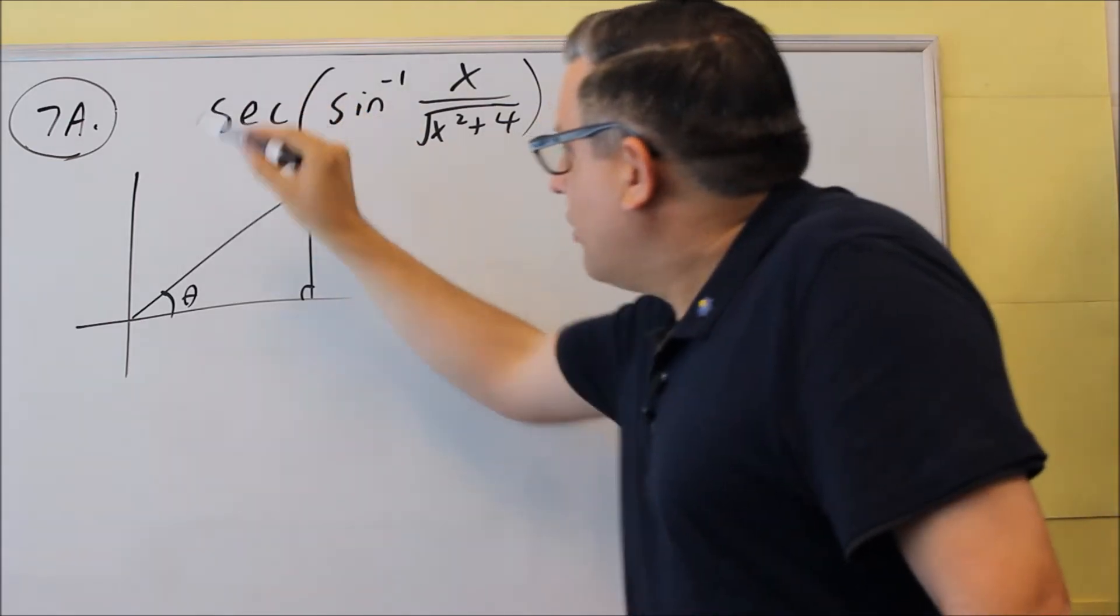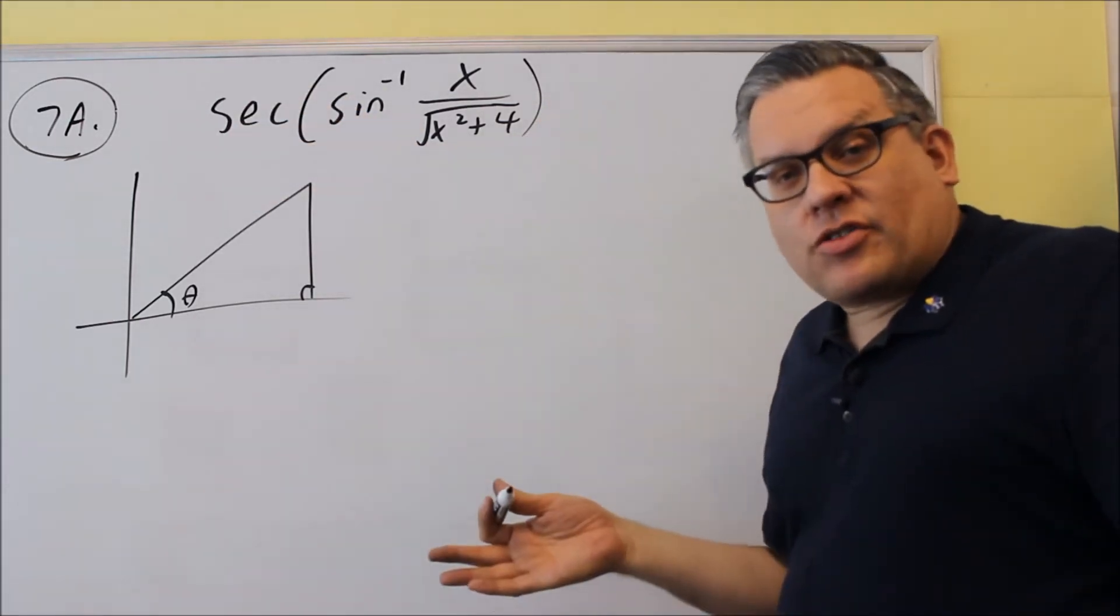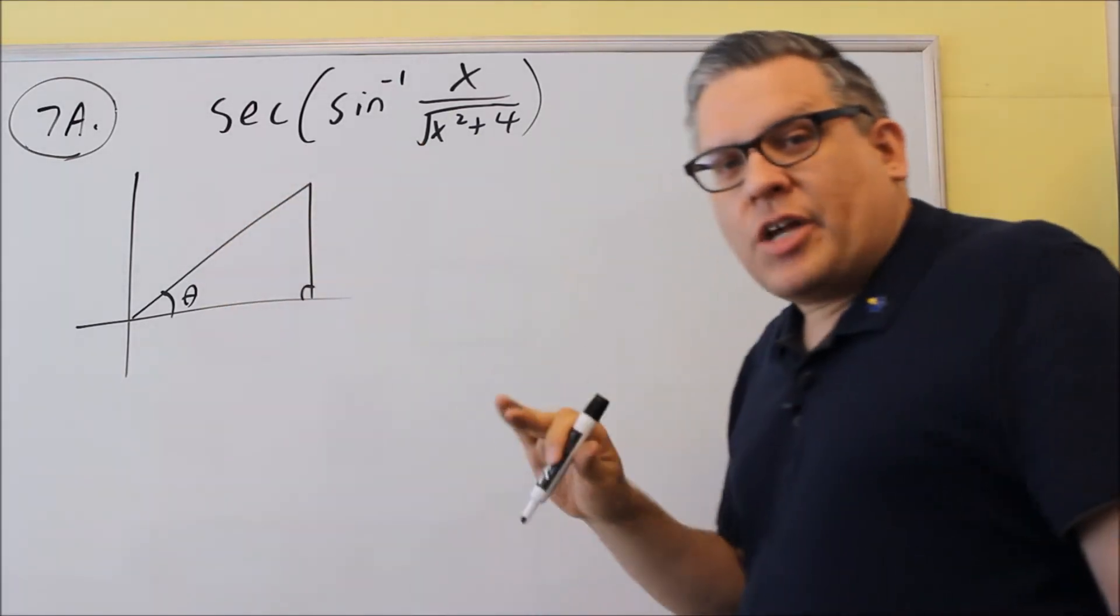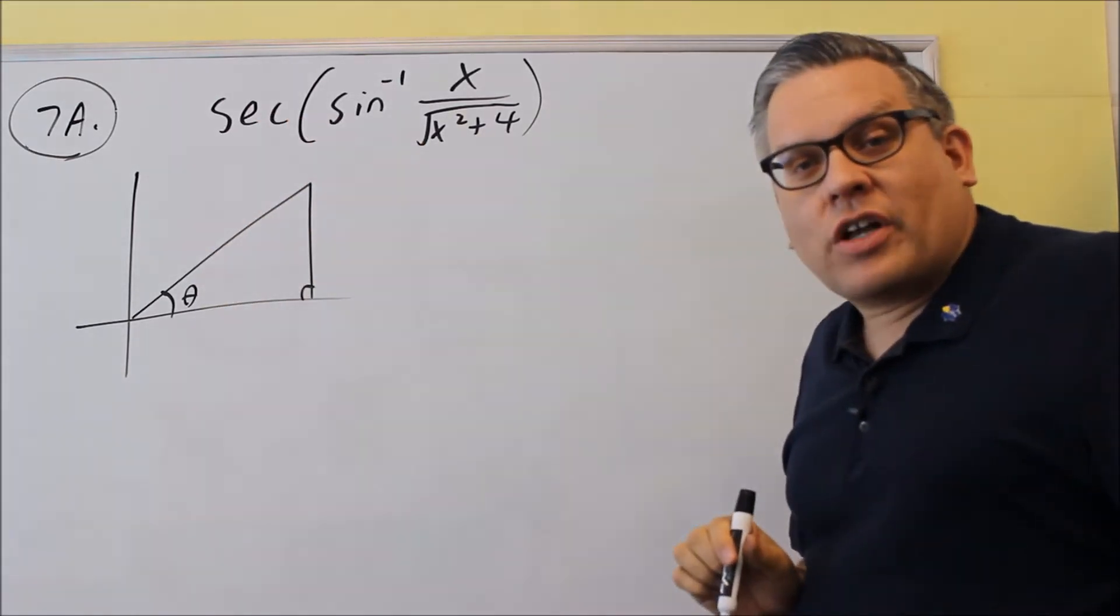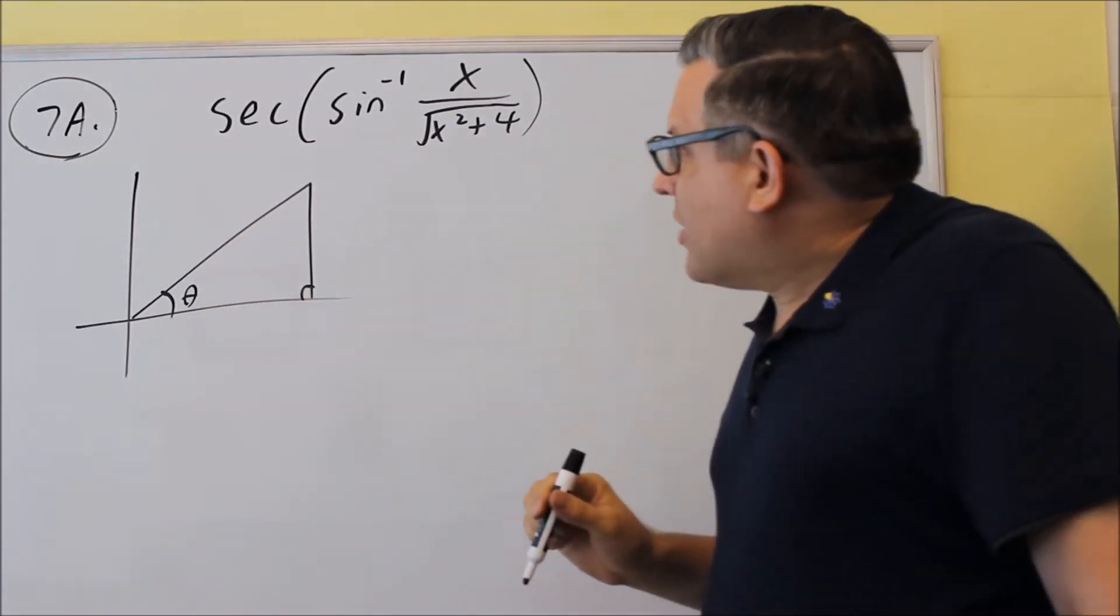And I'm going to use the definition for sine. The outside one is used to get my final answer. So once I have all the three sides labeled, then I'll use secant to actually write the answer for it based on that.